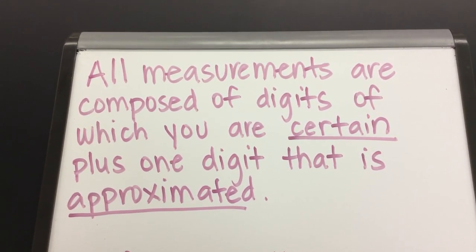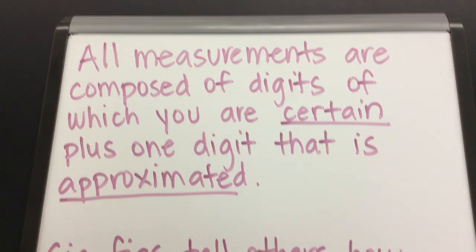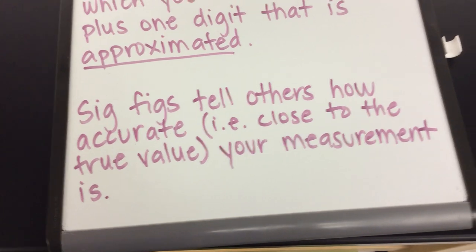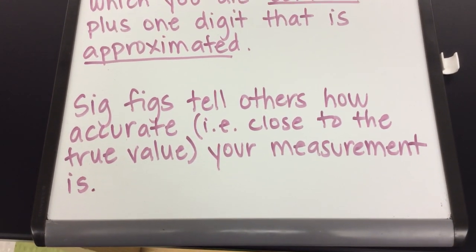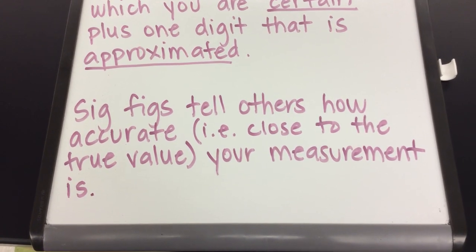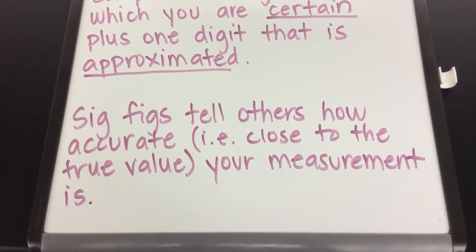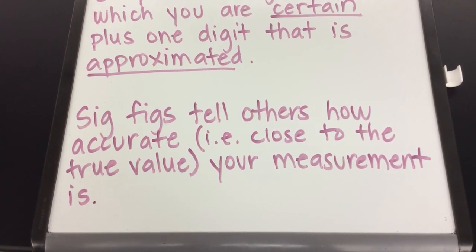I'm going to show you several examples of what I mean by certain digits versus approximated digits. So why is it that we use significant figures or sig figs? What is the purpose? Well, sig figs tell others how accurately we made our measurement and accuracy refers to how close we are to the true value.